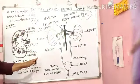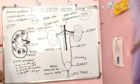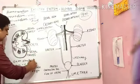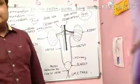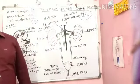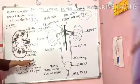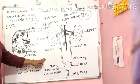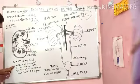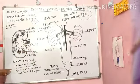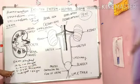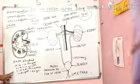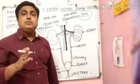What is the internal structure and size of the kidney? The kidney is a bean-shaped structure, measuring 10 to 12 centimeters in length, 5 to 7 centimeters in width, and 2 to 3 centimeters in thickness. Its weight is 150 grams.